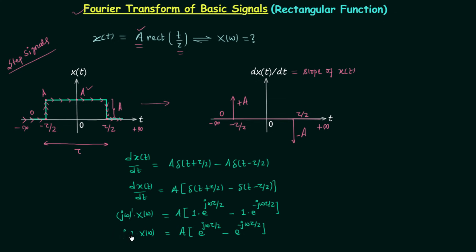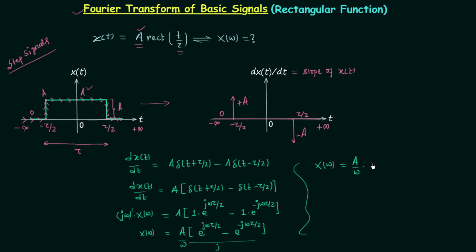So we have j omega times X(omega) equal to A times [e to the j omega tau by 2 minus e to the minus j omega tau by 2]. Dividing both sides by j omega gives X(omega) equals A times [e to the j omega tau by 2 minus e to the minus j omega tau by 2] divided by j omega. We can write e to the j omega tau by 2 minus e to the minus j omega tau by 2 divided by j equals 2 sin(omega tau by 2), giving X(omega) equals (A over omega) times 2 sin(omega tau by 2).